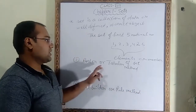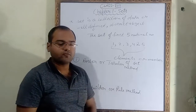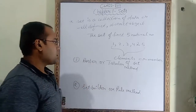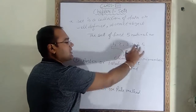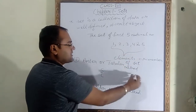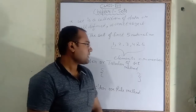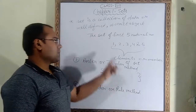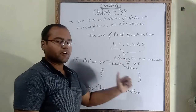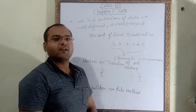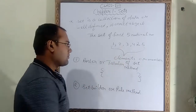So in the first method — the roster method — what do you have to do? In this method we have to represent all the members in braces. Braces means brackets. All the elements of the set we have to represent in braces and we have to separate each number with the help of commas.